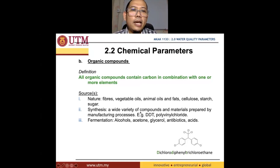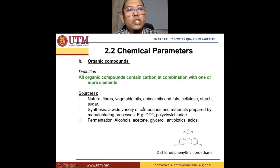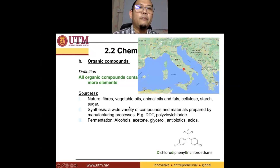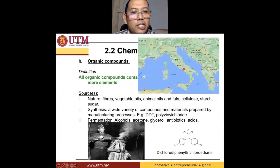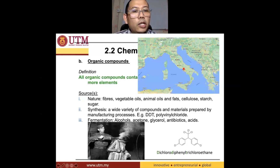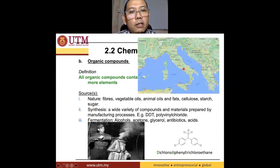So DDT can kill insects. DDT has been used in World War II — if you look at this picture, a person is being sprayed with DDT during World War II. This was basically to prevent or kill the bacteria that cause typhus.